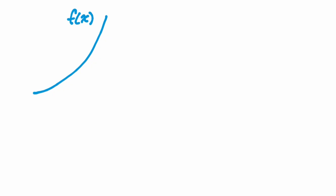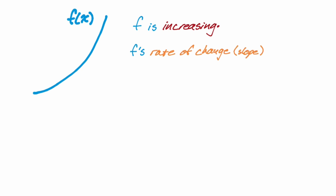Here's a picture of our function. The first thing we're going to talk about is if it's increasing or decreasing. F is definitely increasing in this case because the Y values are just getting bigger as you move from left to right. Now we want to talk about the rate of change of F. Rate of change is another word for slope — they're interchangeable. In this case, the slope is positive.